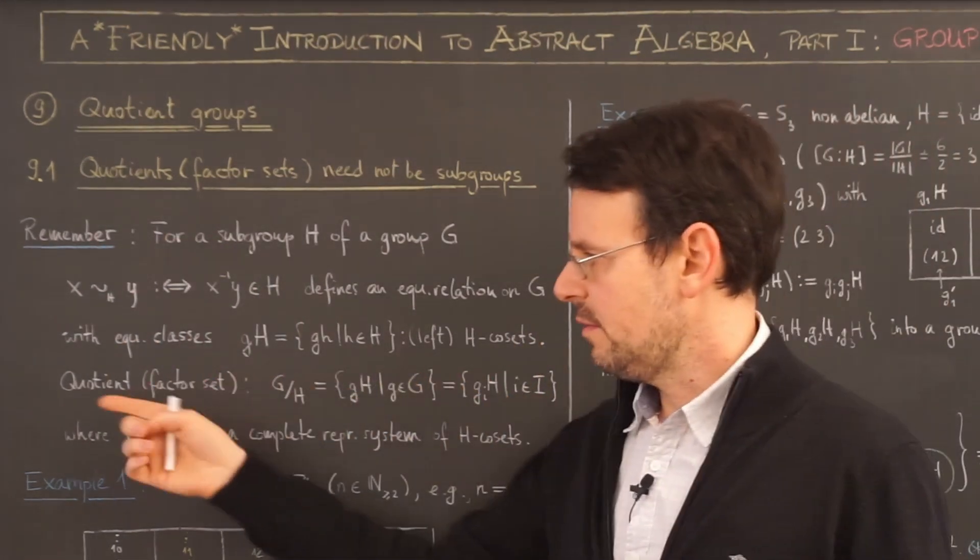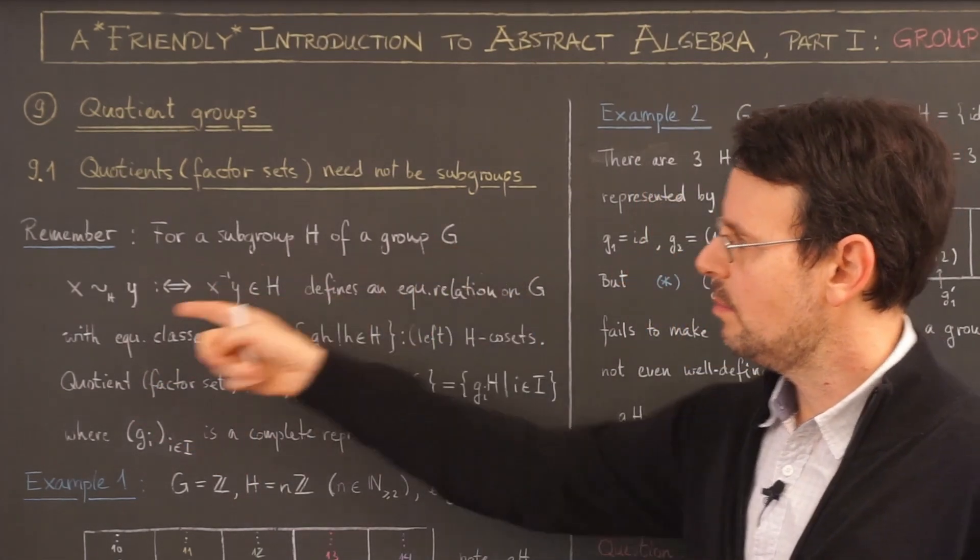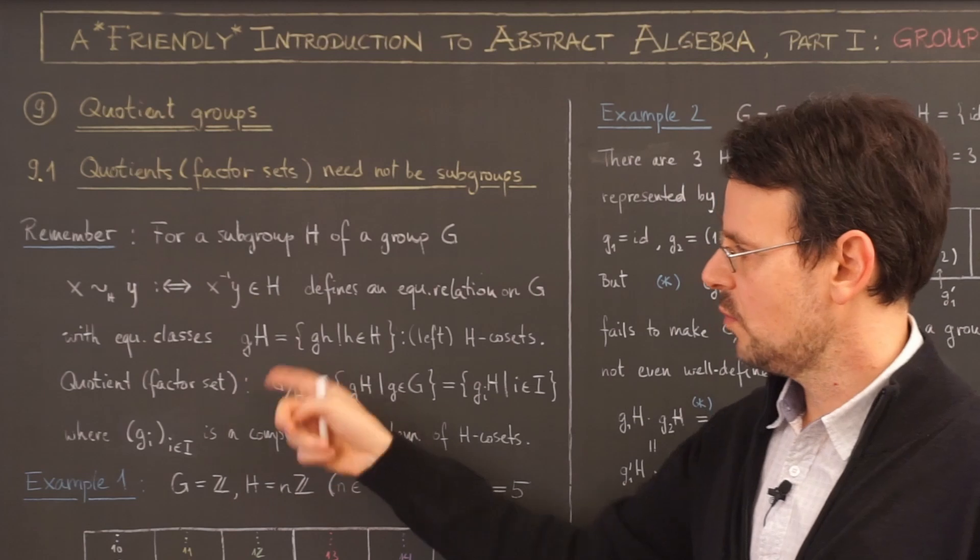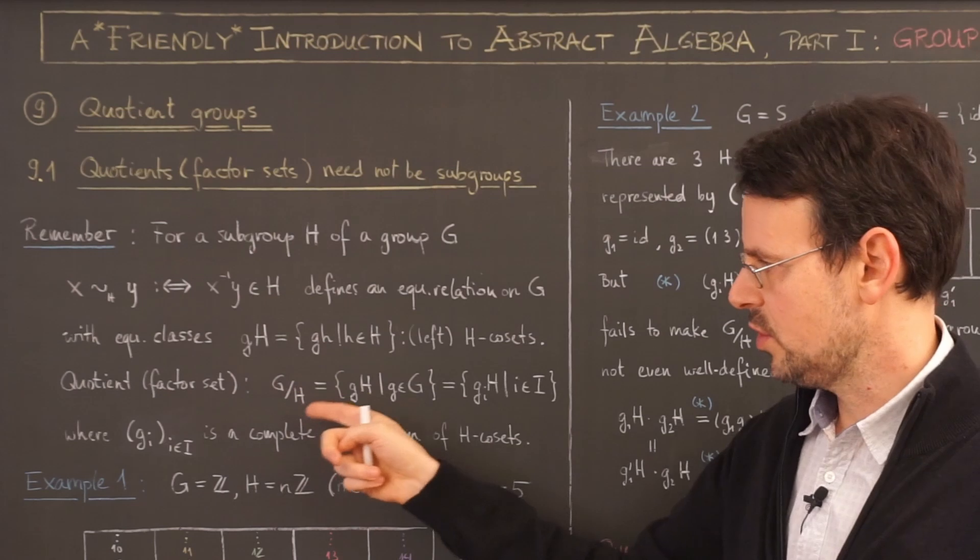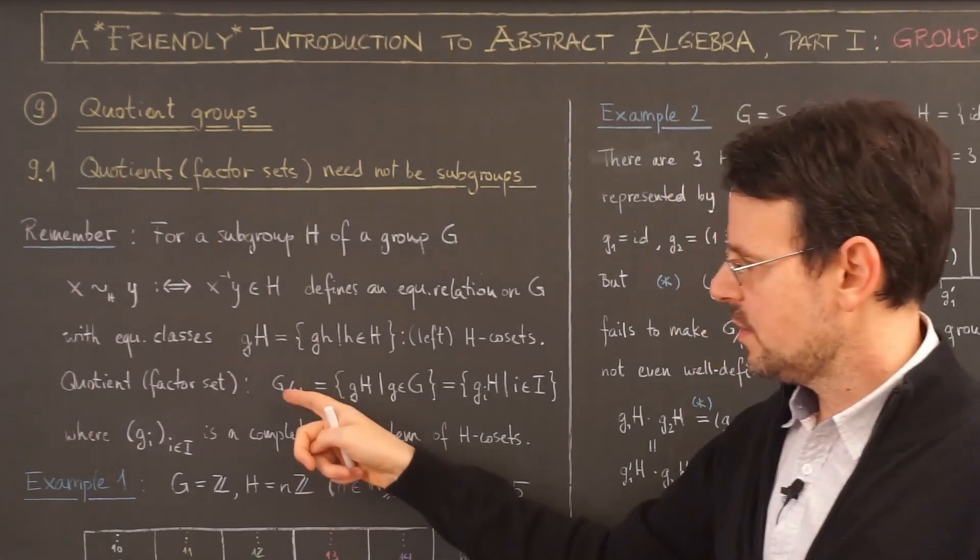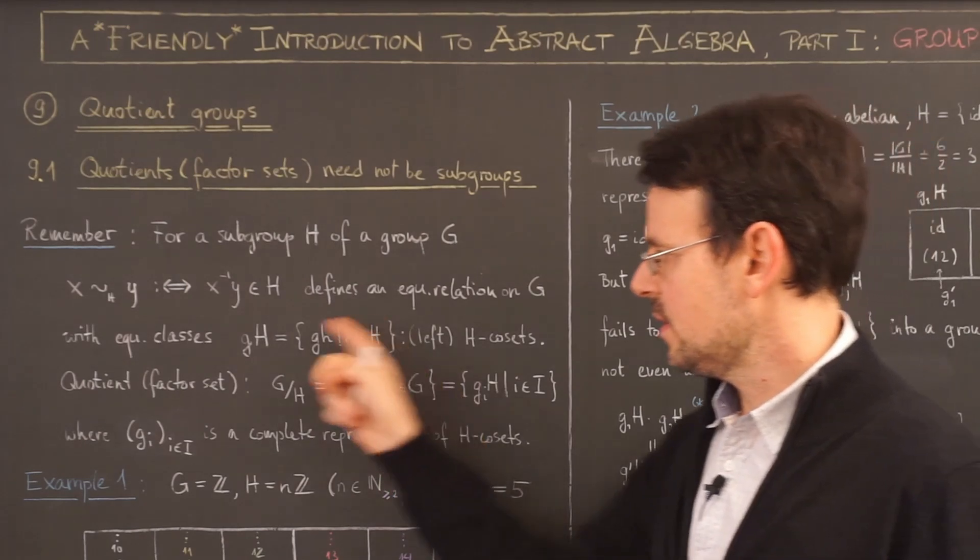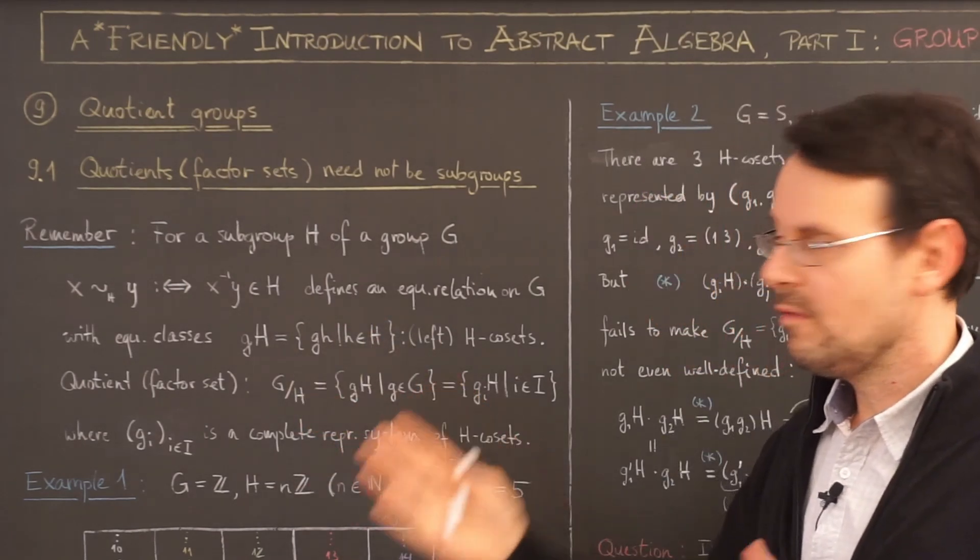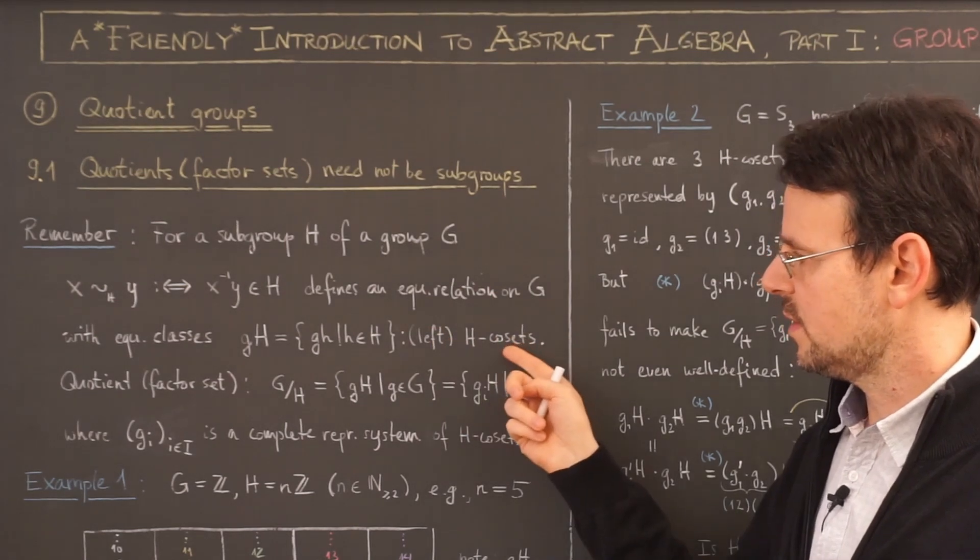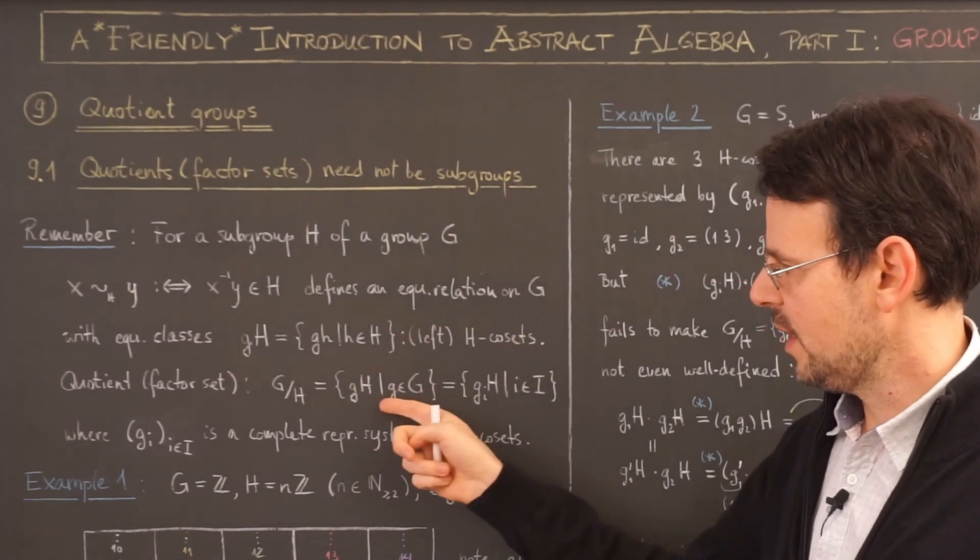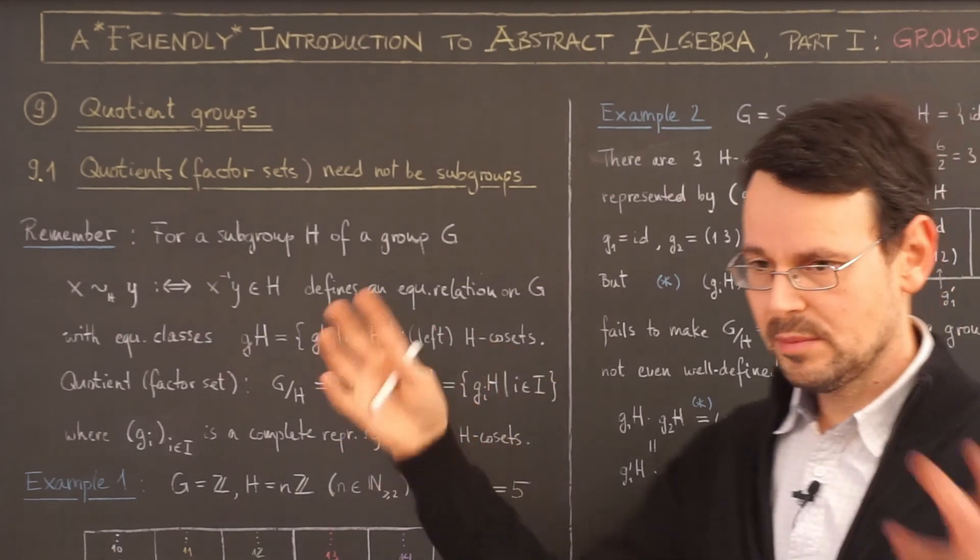And this set here is exactly the equivalence class of this equivalence relation. Then we can take the factor set or the quotient of this set here by this equivalence relation, which in a group theoretic context is denoted by G mod H or G modulo H. We could also have written G modulo tilde. And this is simply the set of all equivalence classes, in this case, of all left cosets.